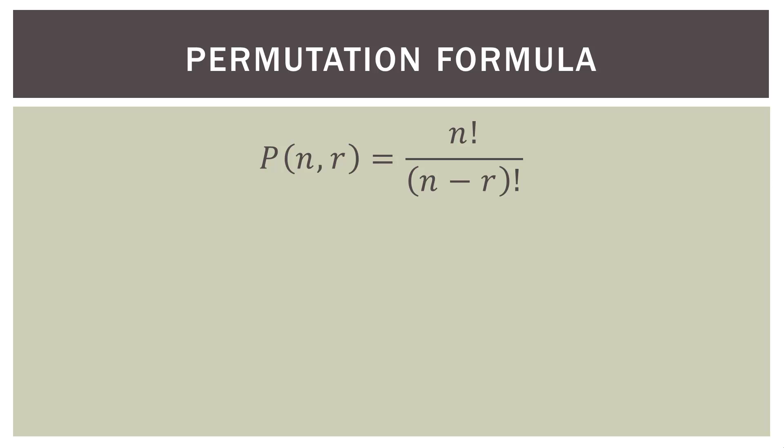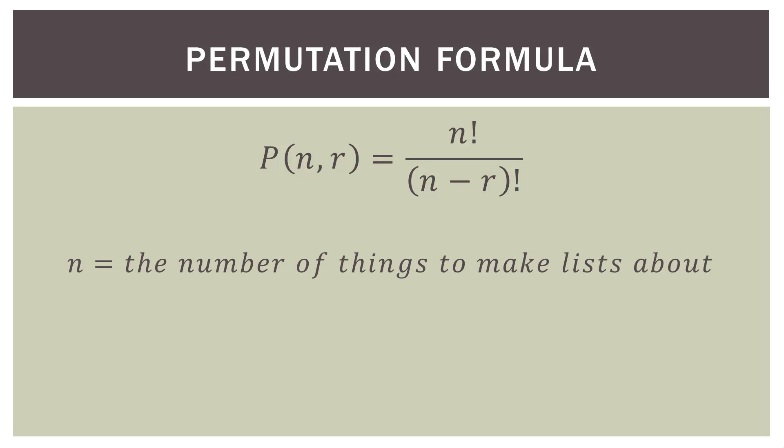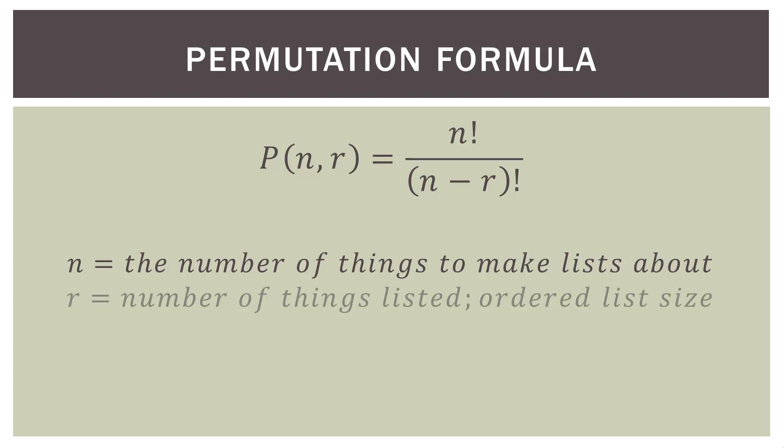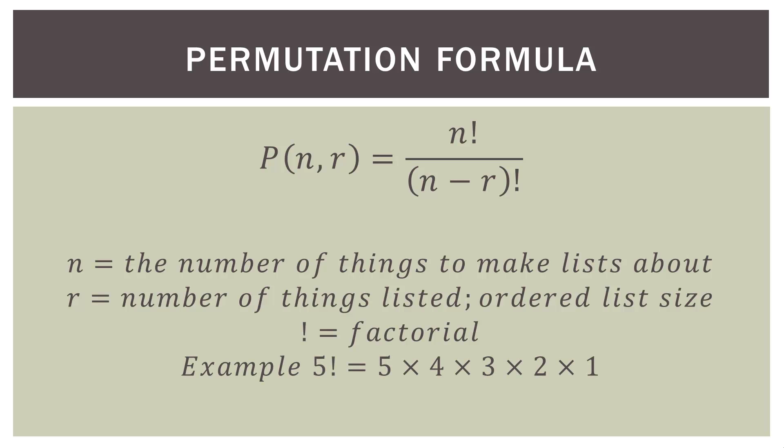Here's our formula to calculate this by hand. Our permutation is a fraction where on top we have n factorial divided by (n minus r) factorial. The n and r come from the problem. N is the number of things to make lists about, r is the number of things listed — the length of our ordered list. The exclamation point is just factorial, so for example 5 factorial is 5 × 4 × 3 × 2 × 1. We just substitute those numbers into the equation.